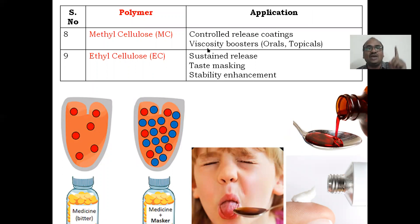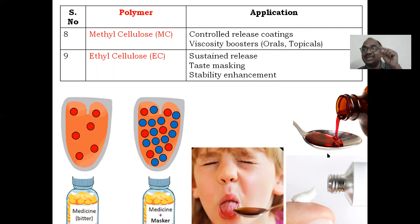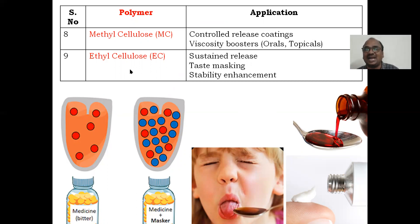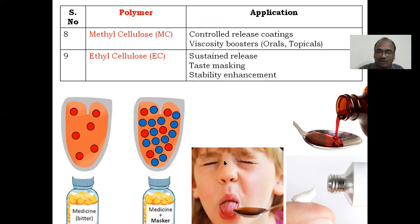Methyl cellulose is used for controlled release coatings and as a viscosity booster for oral and semi-solid topical formulations. Ethyl cellulose is used for sustained release and taste masking. If a medicine is bitter, you add ethyl cellulose as a masker — it masks the taste so that children can take the medicine. It also enhances the stability of the formulation.